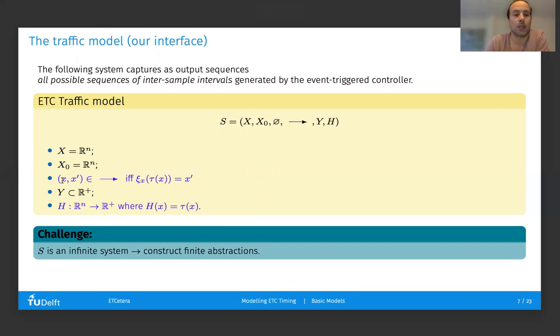That will essentially say that from a given state x, we want to have in our transition relation all the x primes, so the transitions from x to x prime, where x prime is the next sample generated when one starts from x and waits for the associated sampling time called tau of x. We will use this tau of x, the event times, as the output of a given state x. Now, this model is still infinite, and we want to construct finite abstractions that we can manipulate computationally.